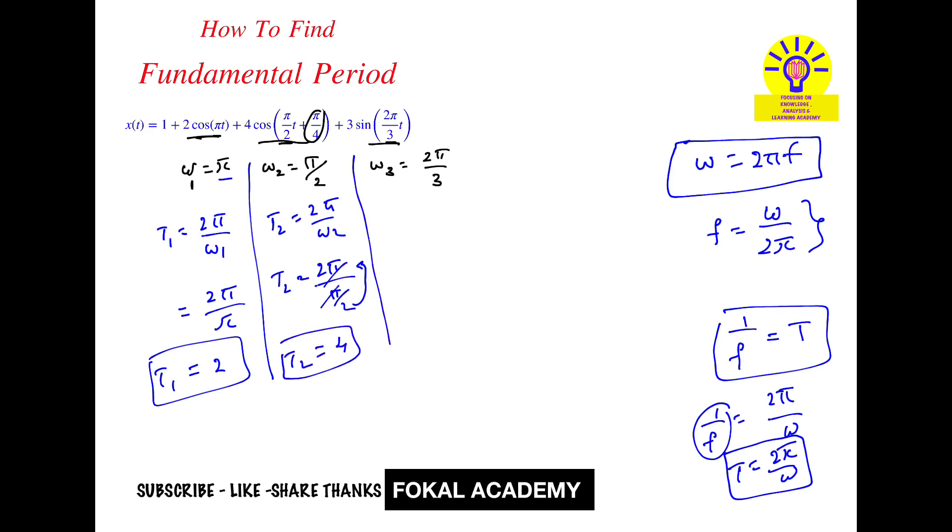Now similarly, T₃ equal to 2π/ω₃. So that's equal to 2π divided by 2π/3. So T₃, 3 upside, 2π cancels. So I got T₃ equal to 3.